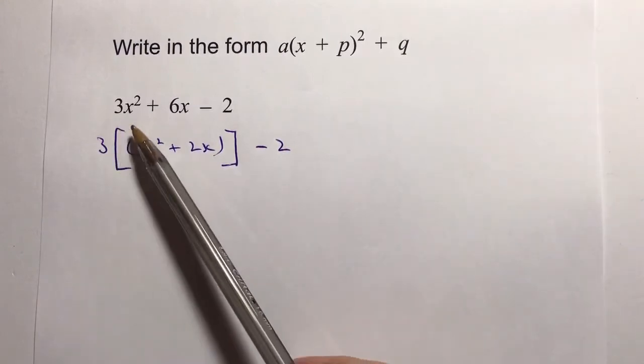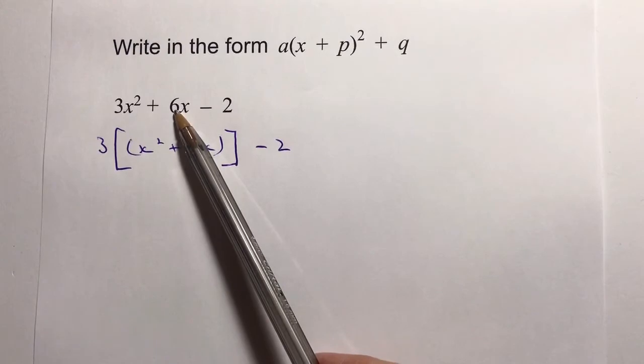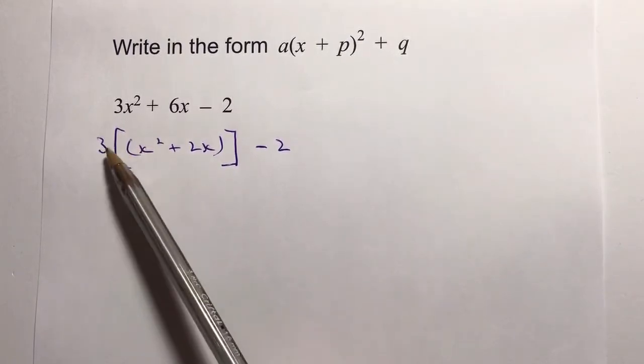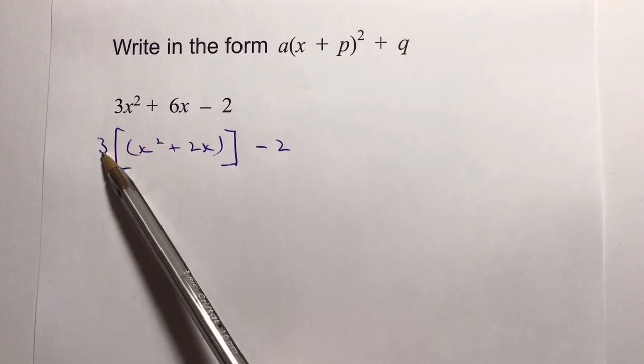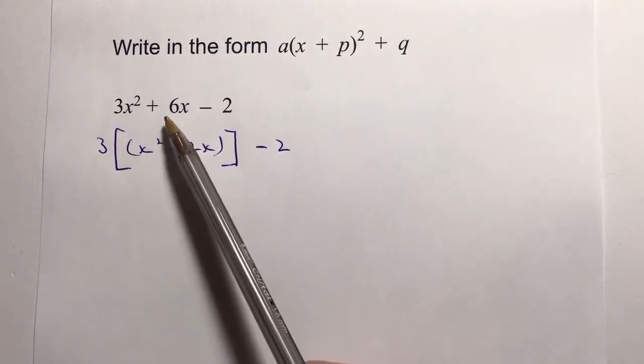So I've taken the value of 3 out from both of these two terms. What do I have to do to 3 to multiply to get 3x²? Well, I multiply it by x². And what do I have to do to 3 to get 6x? I multiply it by 2x.